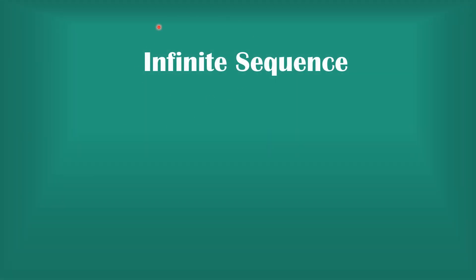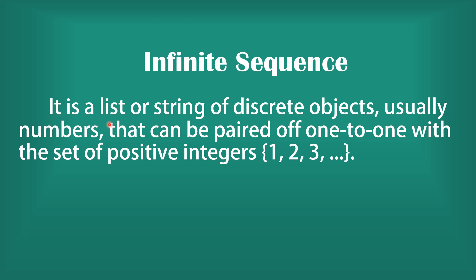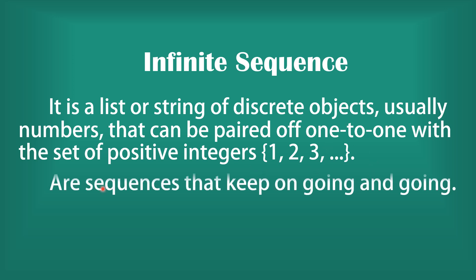How about the infinite sequence? An infinite sequence is a list or string of discrete objects, usually numbers, that can be paired one-to-one with the set of positive integers: 1, 2, 3, and the three dots — the ellipses. It means the sequence keeps going and going, and the last term is infinite.